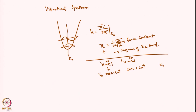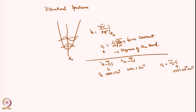Let me call this ν0, the fundamental frequency. So ν0 is equal to ν̃0 bar times c — that is just the transformation between wavenumber and frequency. Since we are measuring in centimeters, the speed of light must be taken in centimeters per second, that is 2.997 × 10¹⁰ cm/s, giving ν0 in units of per second (s⁻¹).